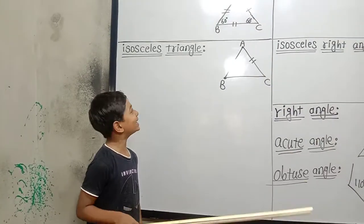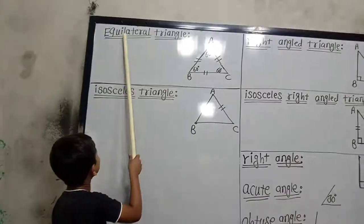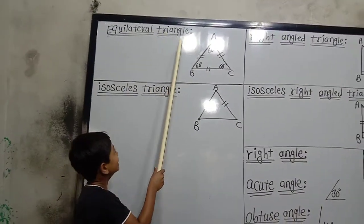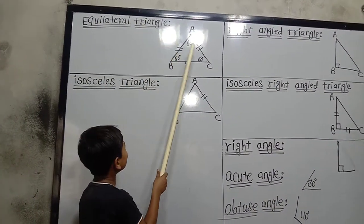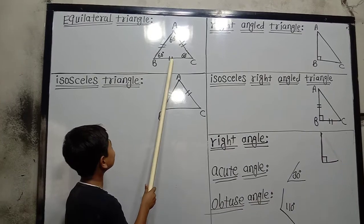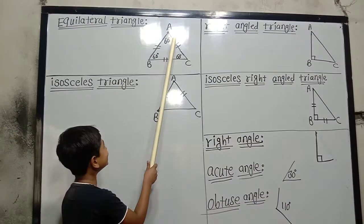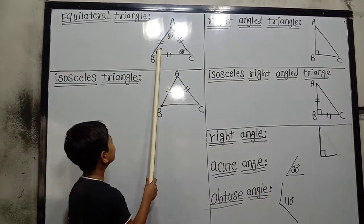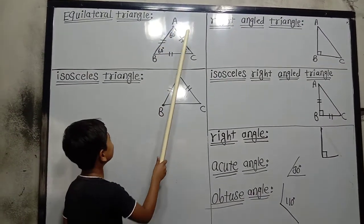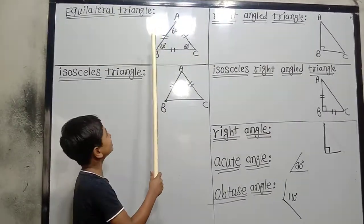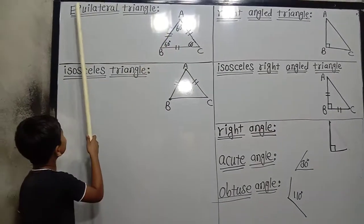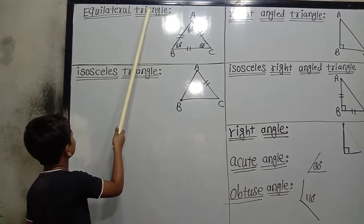We discuss the types of triangle. Equilateral triangle: if all the sides of a triangle are congruent and each angle is 60 degrees, then that triangle is called an equilateral triangle.